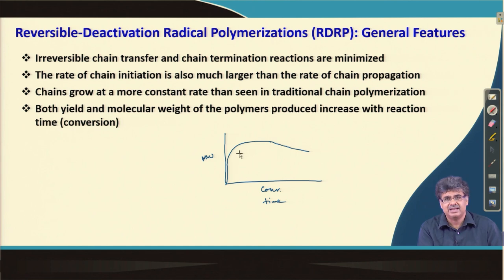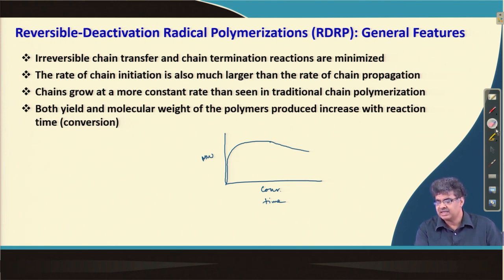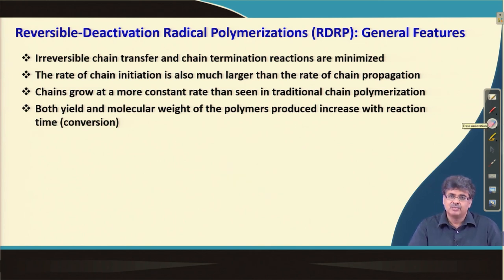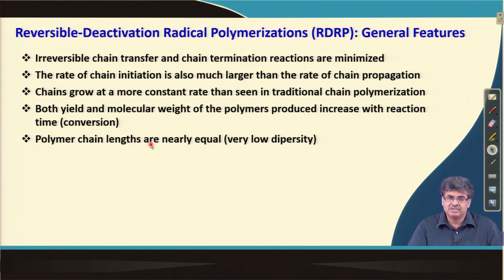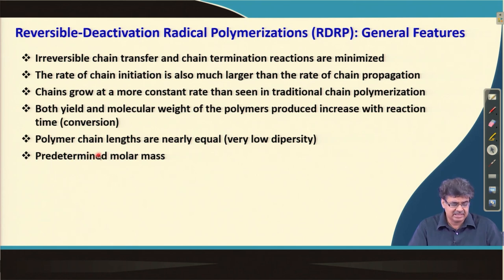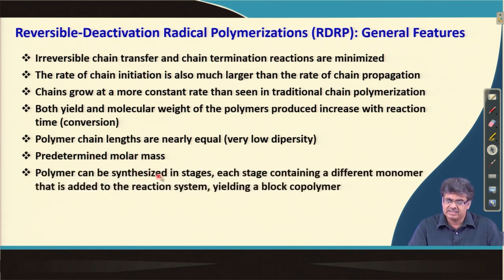In conventional radical polymerization, radicals stay live for a short duration, do propagation, and then react with each other to form dead polymer chains, so we can get high molecular weight polymer from the beginning. With time, as the concentration of monomer and initiator comes down, this molecular weight actually comes down. But in the case of the RDRP process, the molecular weight and yield actually continue to increase linearly with conversion. And polymer chains produced by this process are nearly equal in length, so we have very low dispersity, and we can actually determine the molar mass before the reaction.